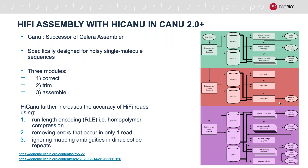Canu is the successor of the Celera assembler, specifically designed for noisy single-molecule sequences, with three modules: correct, trim, and assemble. For HiFi reads, you can exclude the normal correction step — HiCanu settings do their own correction using run-length encoding (homopolymer compression), removing errors that occur in only a single read, and ignoring mapping ambiguities in dinucleotide repeats. This further increases the accuracy of HiFi reads, which is very helpful in subsequent assembly.